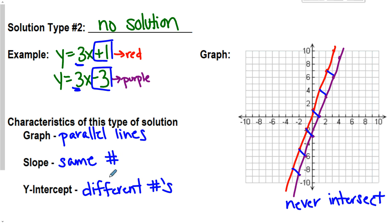So, to be a no solution and just looking at the equations, I'm looking, hey, slope the same, y-intercept different, no solution. And if I were to graph it, I would see that I have a set of parallel lines.